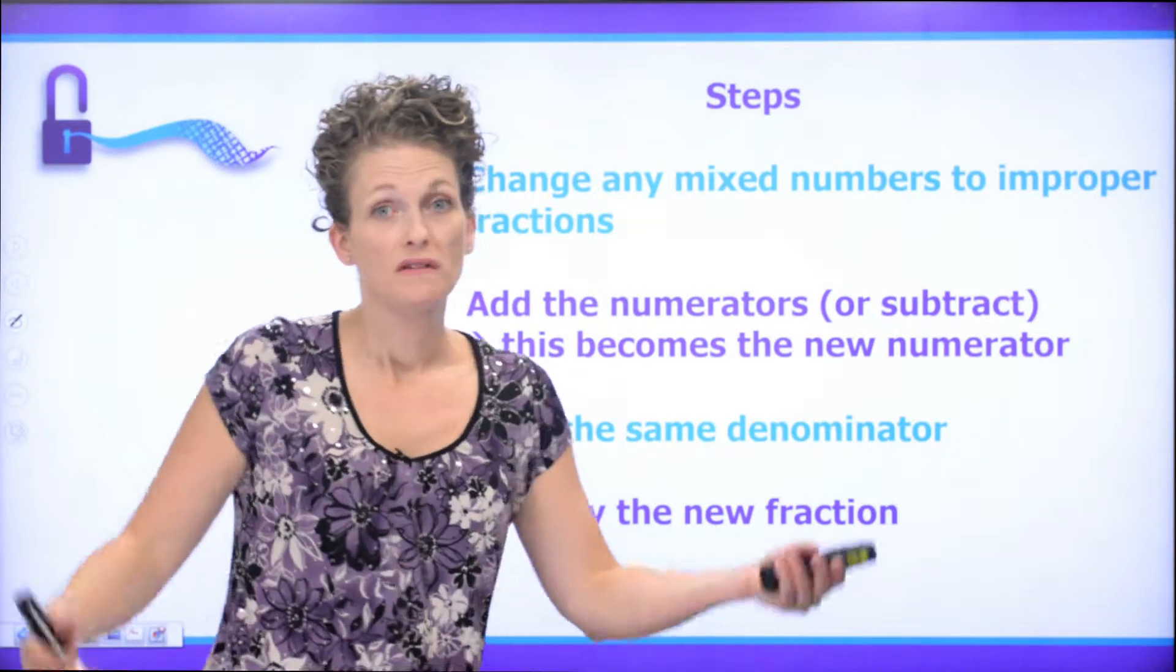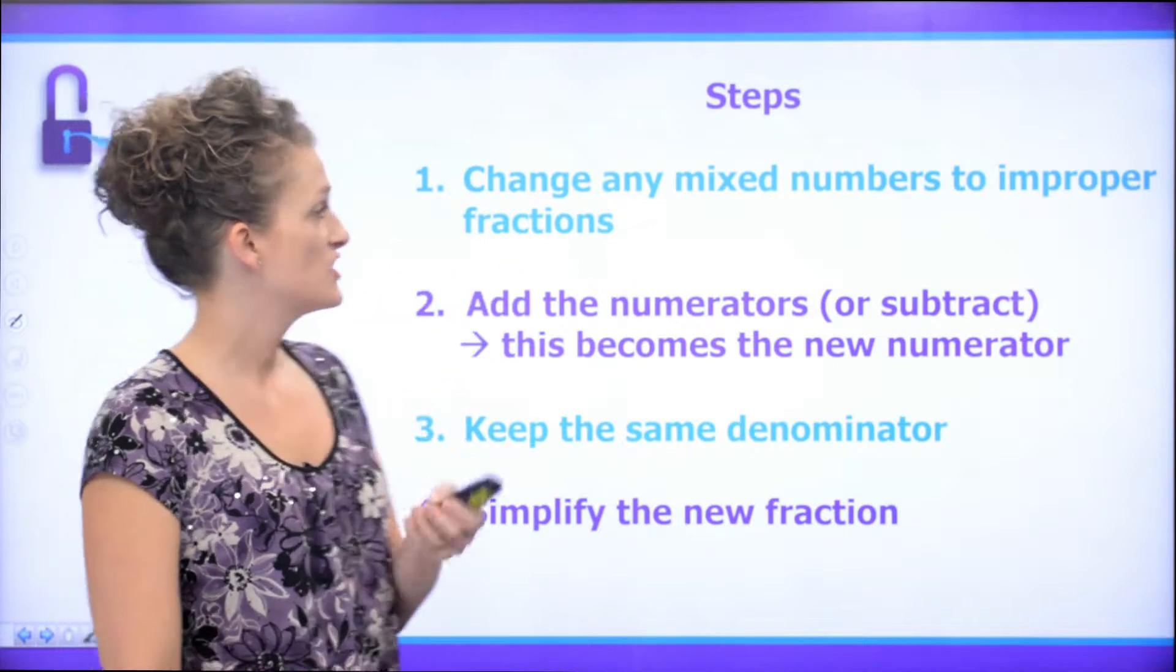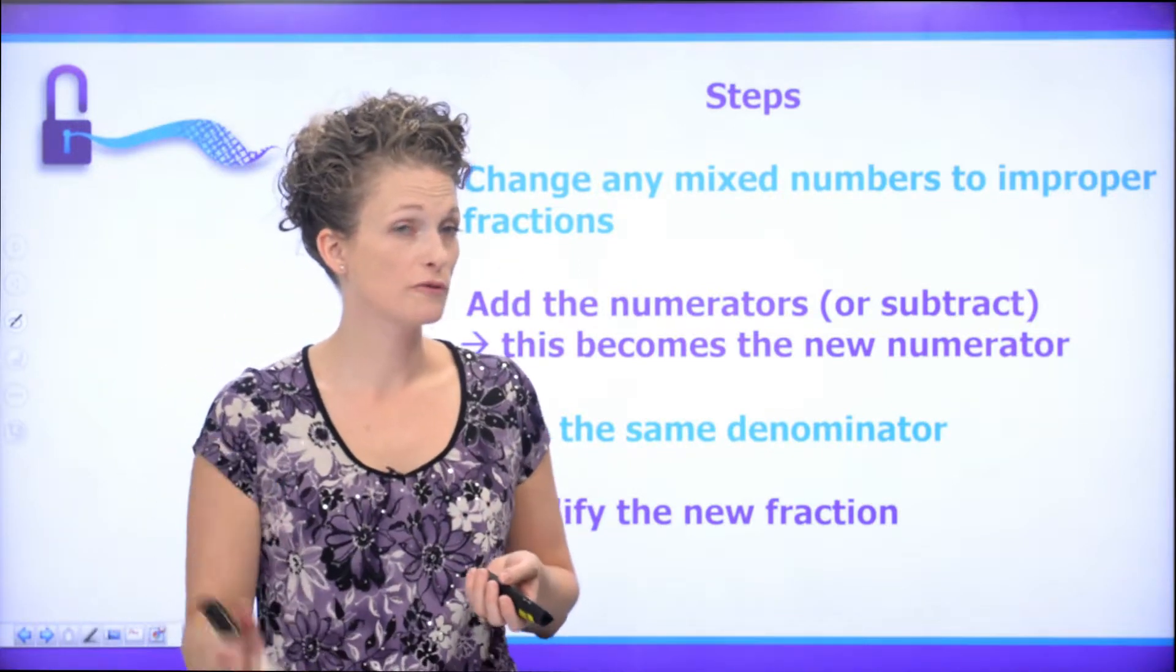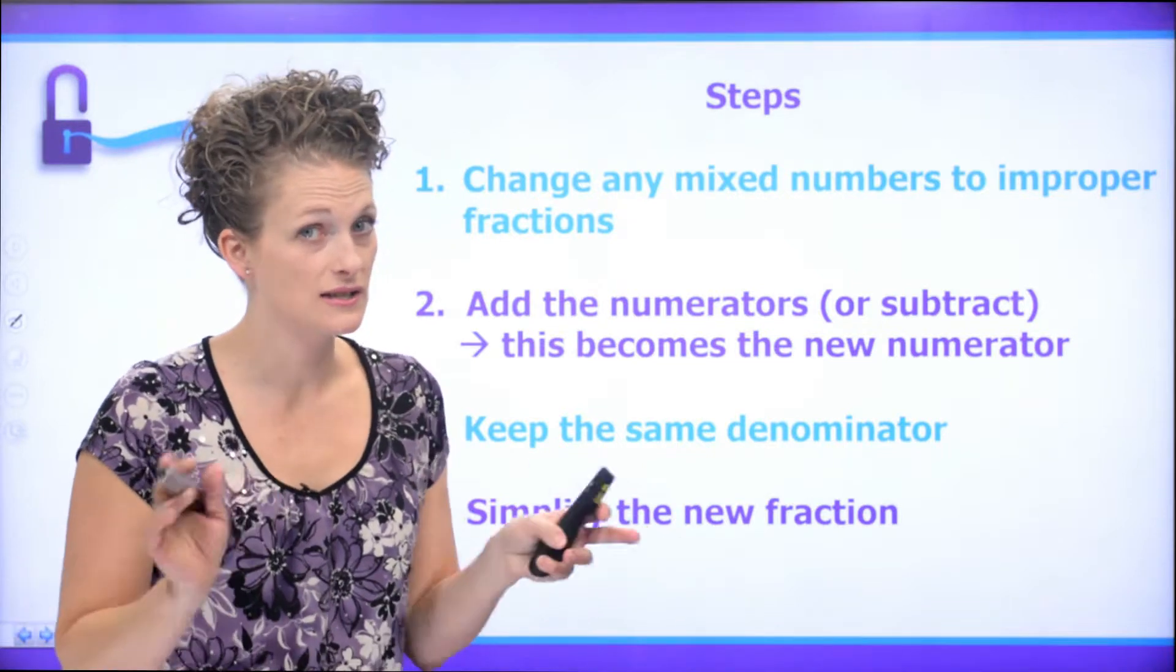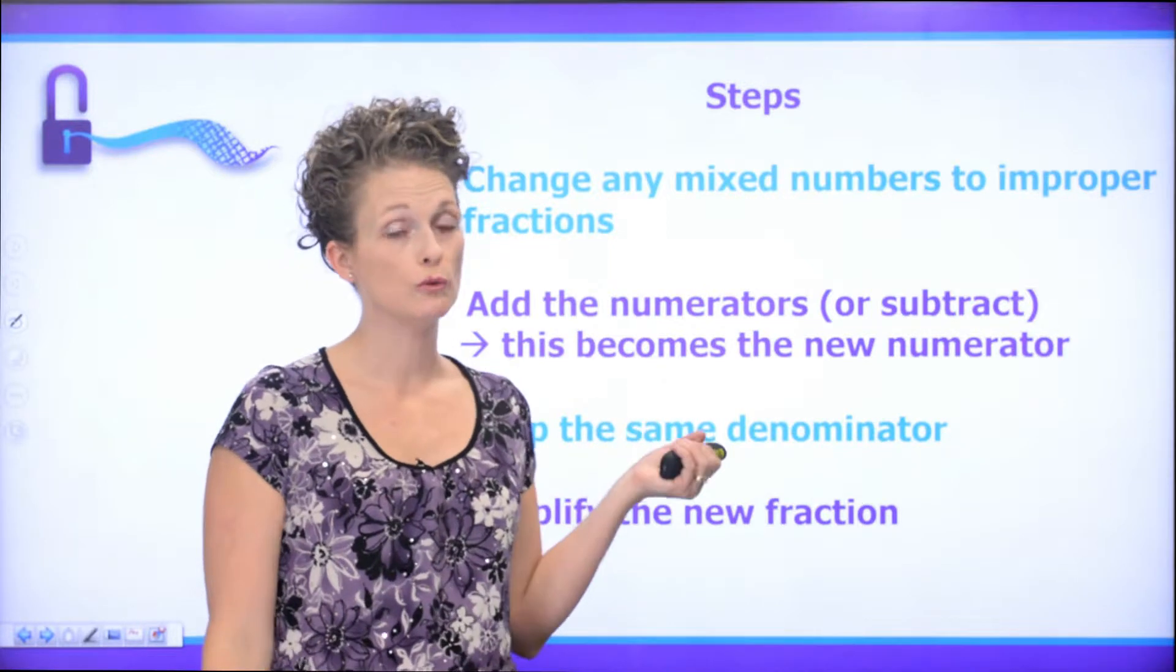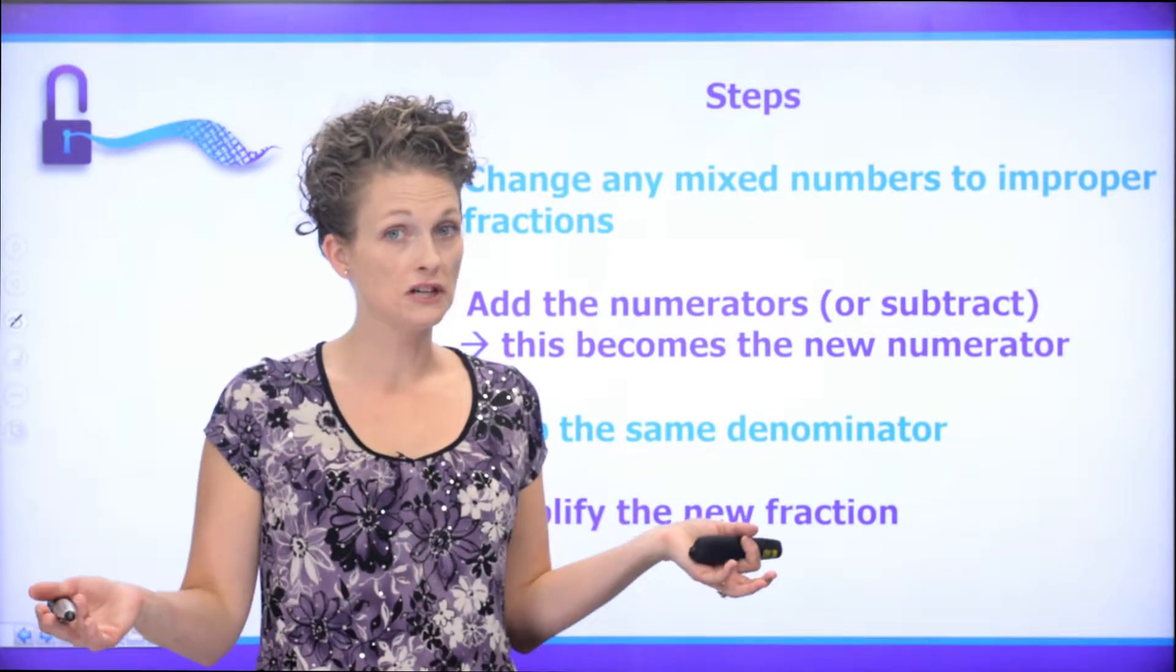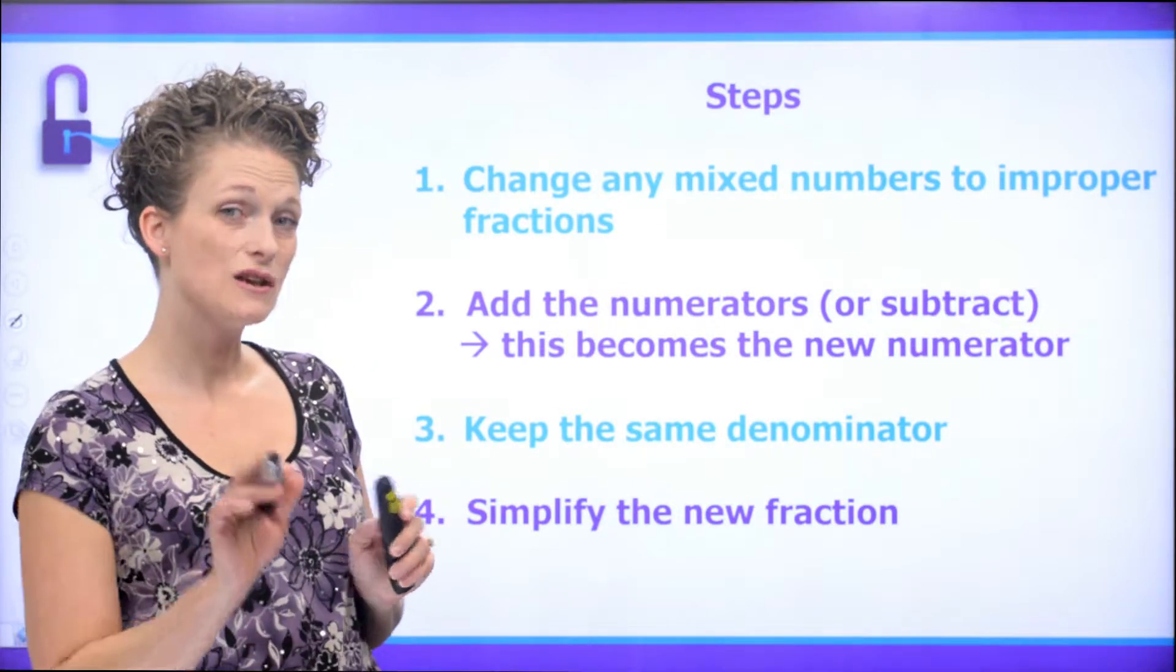So, follow some steps to make it easier. Change any mixed numbers to improper fractions. Add the numerators or subtract - it doesn't matter whether it's add or subtract, same thing. And this number is your new numerator. Keep the same denominator all the time. And then simplify the new fraction. That's all there is to it.